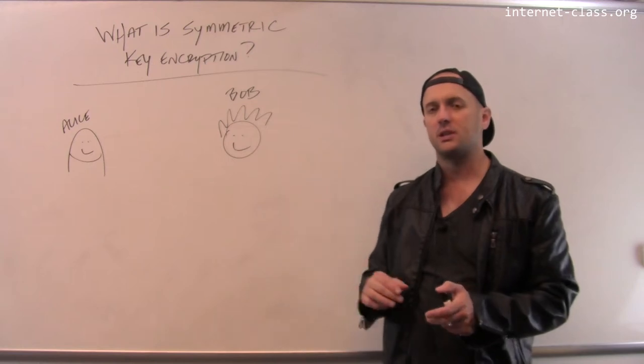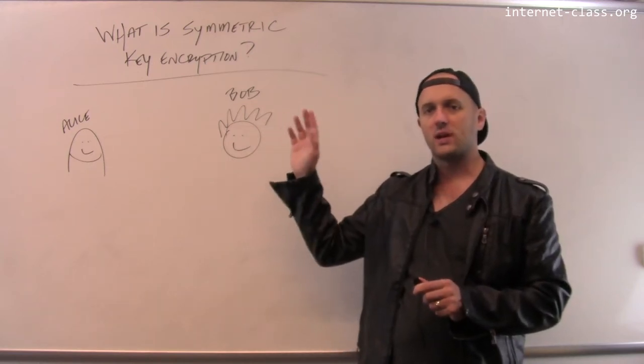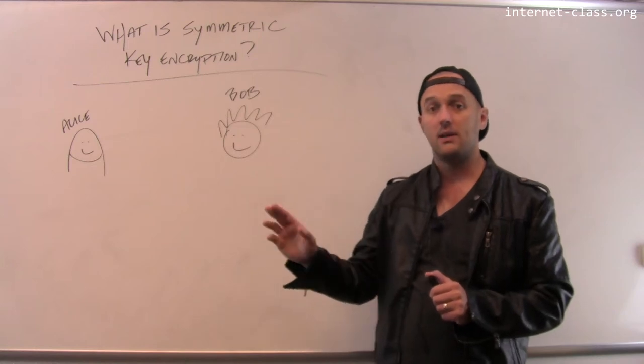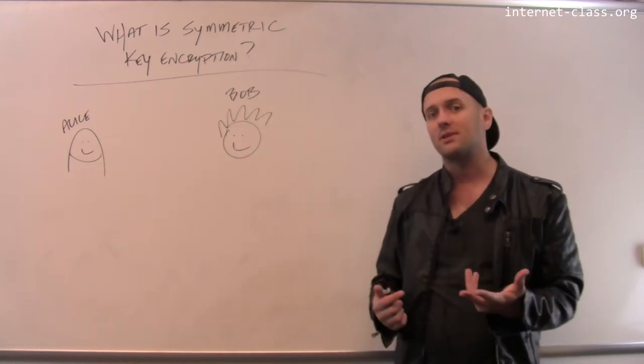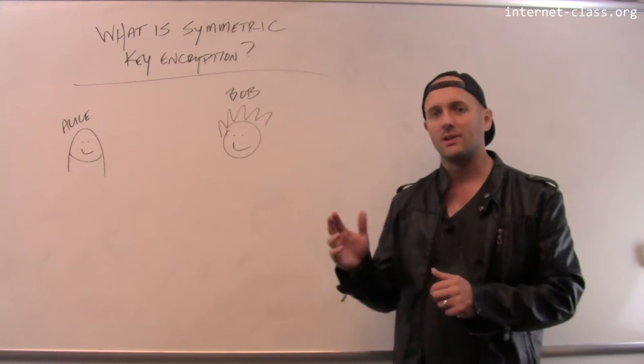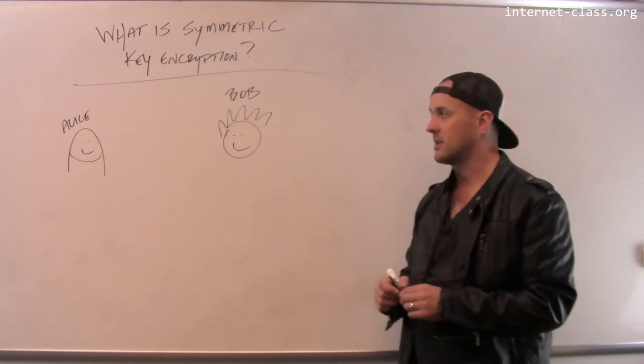The original form of encryption that goes back thousands of years is something that's called symmetric key encryption. And the opposite or the contrast of symmetric key encryption, asymmetric key encryption, was actually not known until the 1960s. So this is what people used for basically all the way back into antiquity.